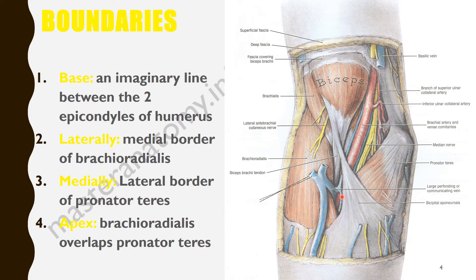Now let's talk about the medial and lateral borders. The medial border is made up by the lateral border of the pronator teres muscle. While the medial side of the brachioradialis muscle will form the lateral border. I hope you understand why we are seeing medial side for lateral border and the lateral side for medial border.